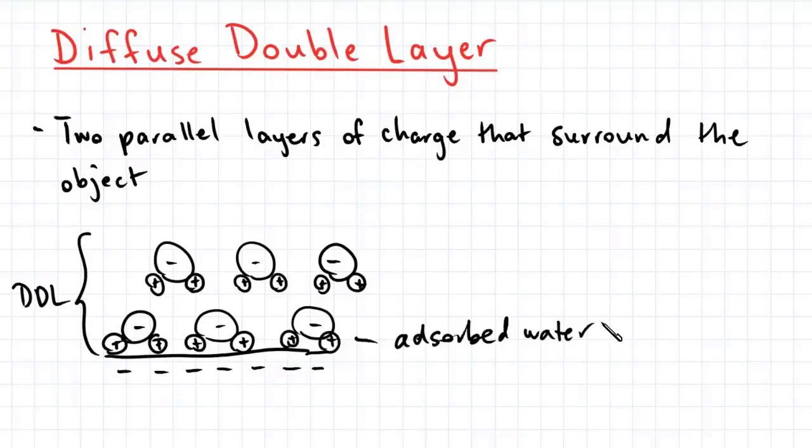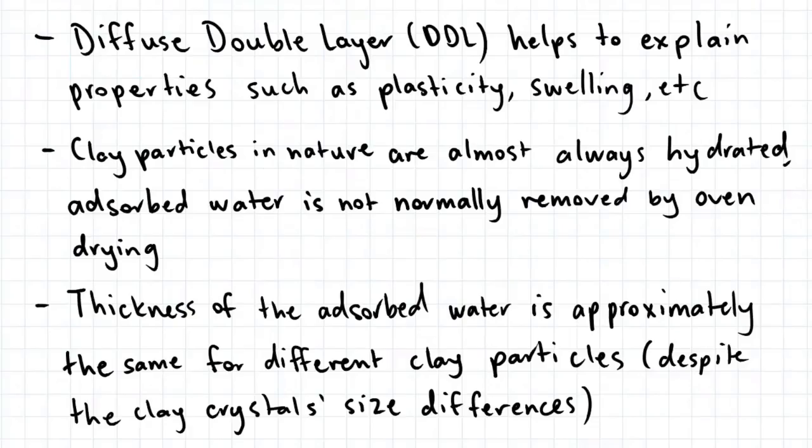So the first layer comprises water molecules absorbed to the surface of the clay particles, and they're very strongly held there by chemical interaction, whereas the second layer is composed of water molecules which are attracted to the surface by electrical charge. So the second layer is loosely associated with the object. The diffuse double layer helps to explain properties in clay, such as plasticity and swelling.